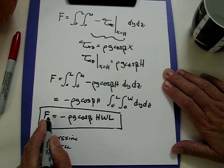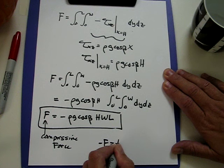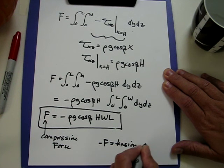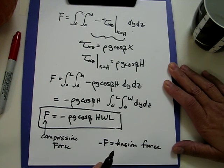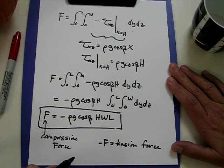If we want the tension force, we need minus F, which is the usual convention in mechanical engineering. The compressive force is used very often in some chemical engineering textbooks.